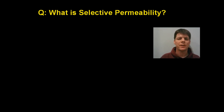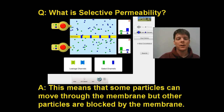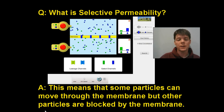Now we want to talk about this concept of selective permeability. We know that cell membranes have this, but what does it mean? Selective means picky or choosy. Permeability means that a material has the ability to allow other substances to move through it. So selective permeability means that some particles are going to be able to move through the membrane, but other particles are going to be blocked by the membrane.